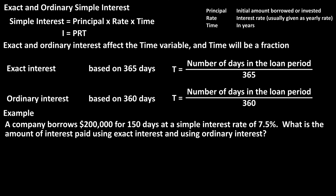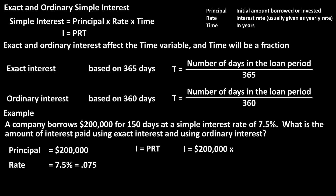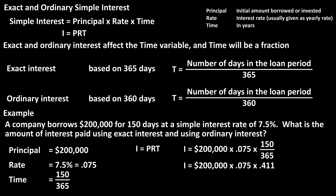Starting with exact interest. Using the simple interest formula — interest equals principal times rate times time — we have the principal of $200,000, the rate of 7.5%, which we convert to a decimal by dropping the percent sign and moving the decimal two places to the left to give us 0.075. And for the time, we have 150 days over 365 days. The division of 150 over 365 equals 0.411 rounded off. So now we have $200,000 times 0.075 times 0.411, which calculates out to $6,165. That is the interest paid using exact interest.